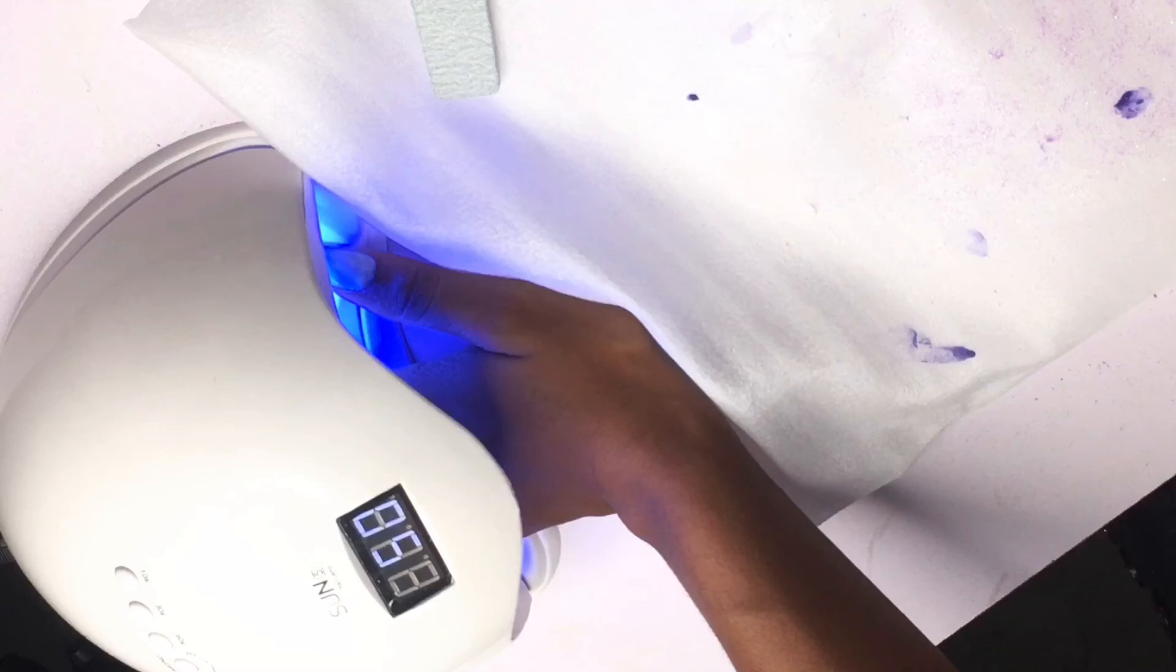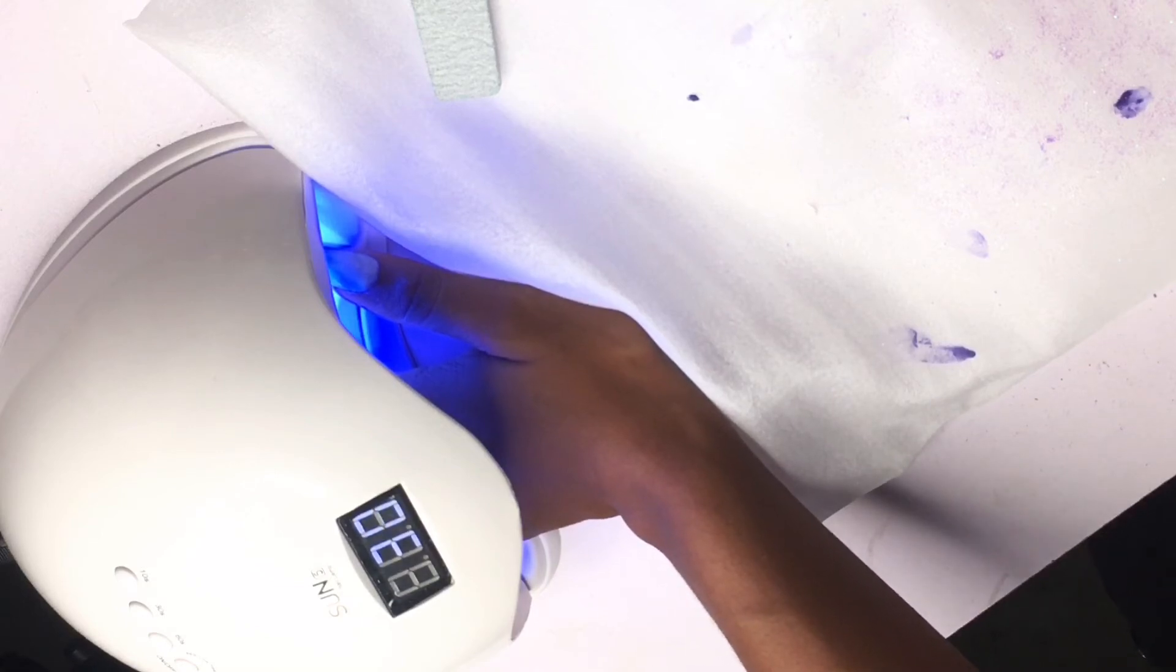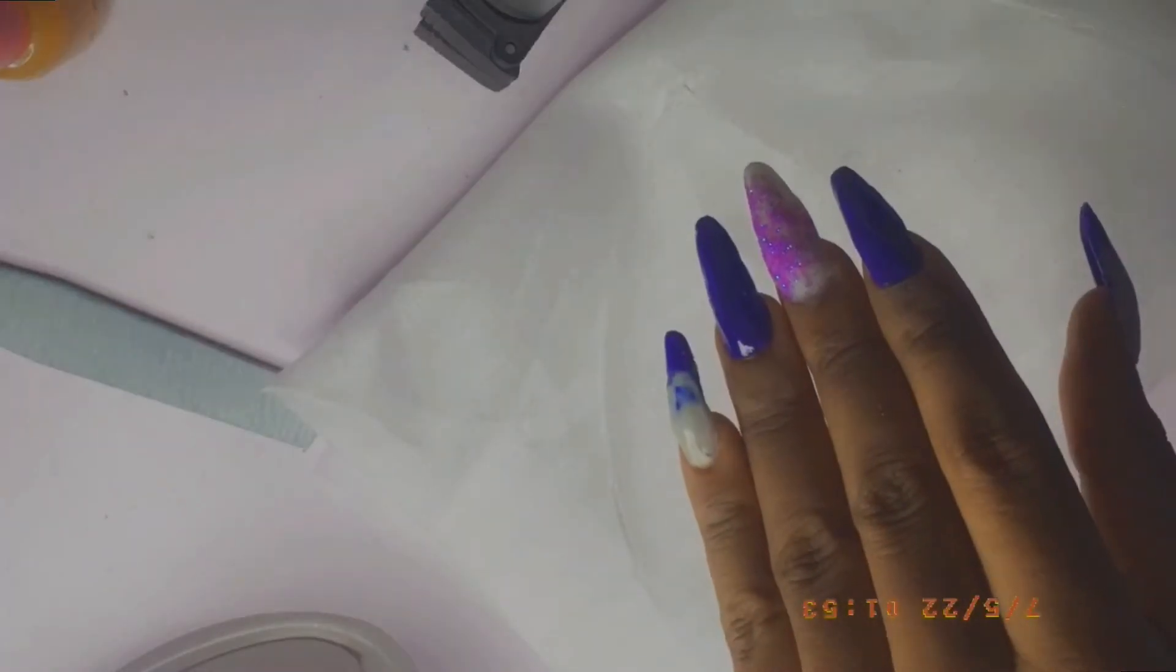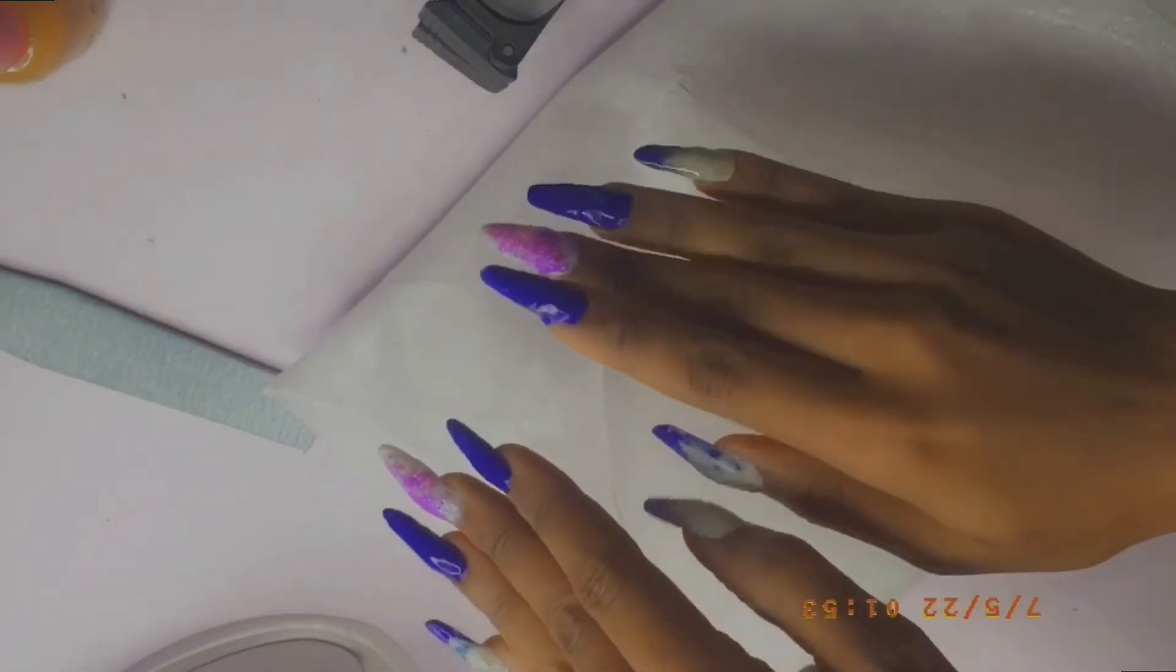I used the top coat and then I put my hand in the UV light just so that it dries up quick. And yeah, that's basically how this whole thing turned out. So this is the end look. Like I said, this nail was not giving.